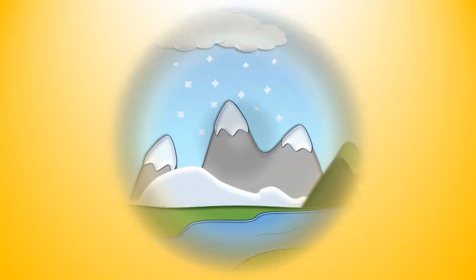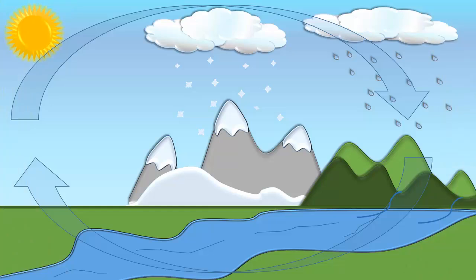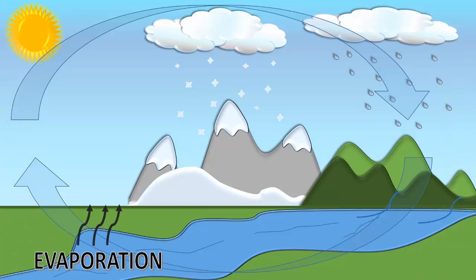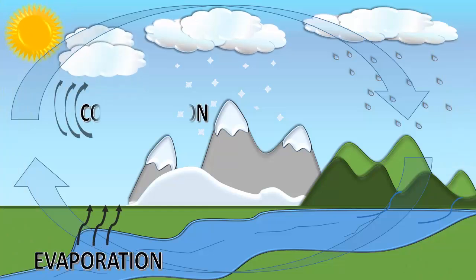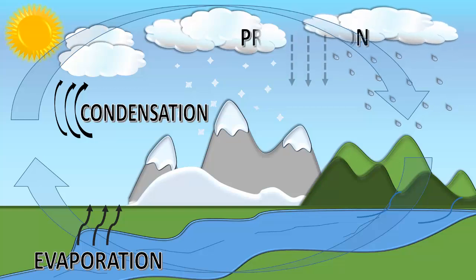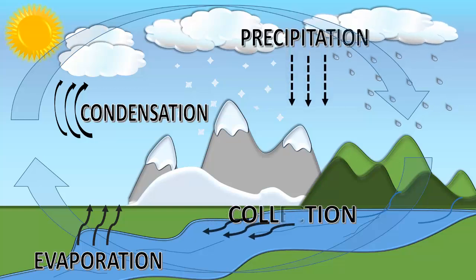The Water Cycle has 4 main steps: Evaporation, Condensation, Precipitation, and Collection.